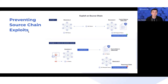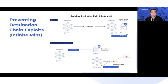But with proof of reserve, the feed can update to inform protocols, developers, and users that these tokens are now only partially collateralized. You'll notice that the token supply is no longer less than or equal to the PoR feed. The other area is infinite mints.